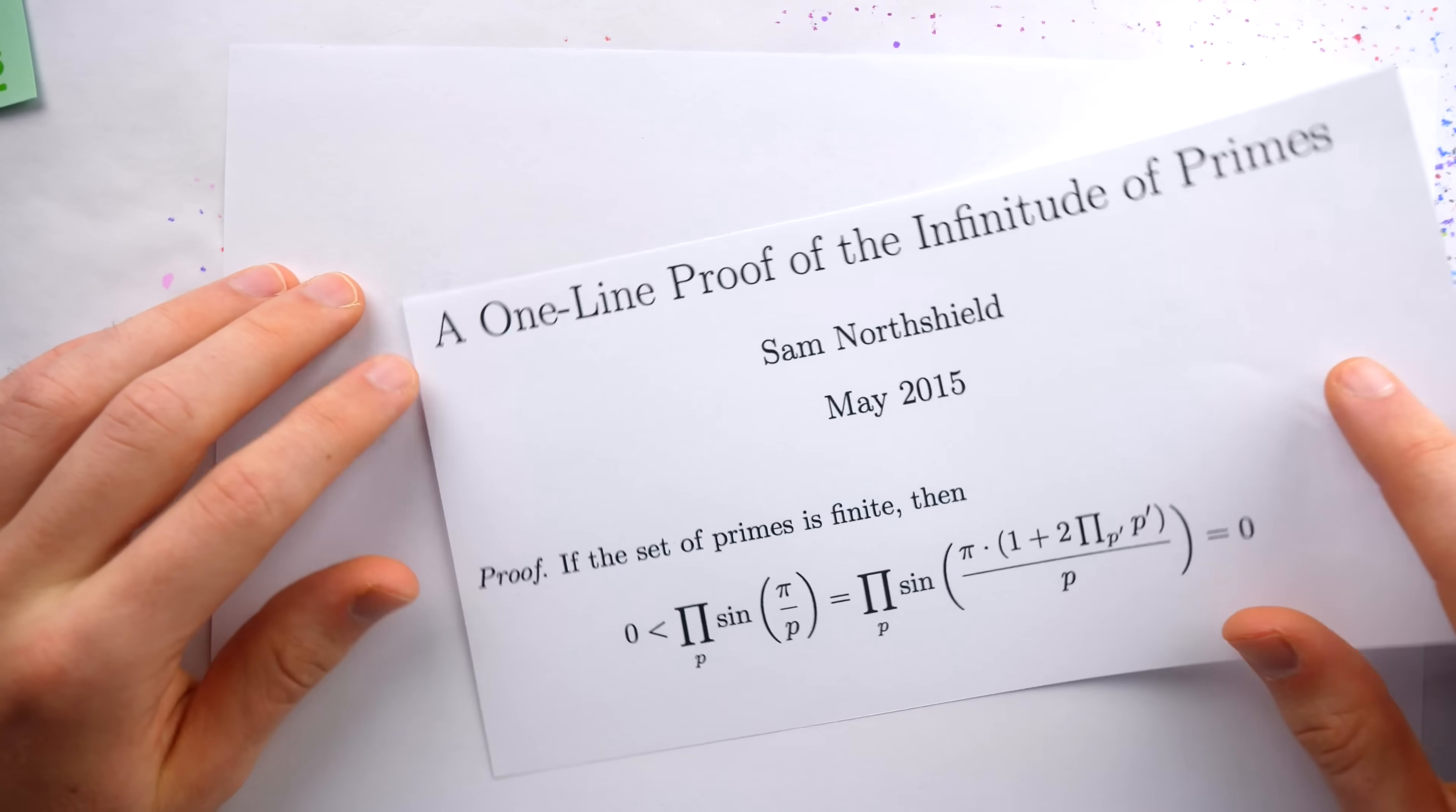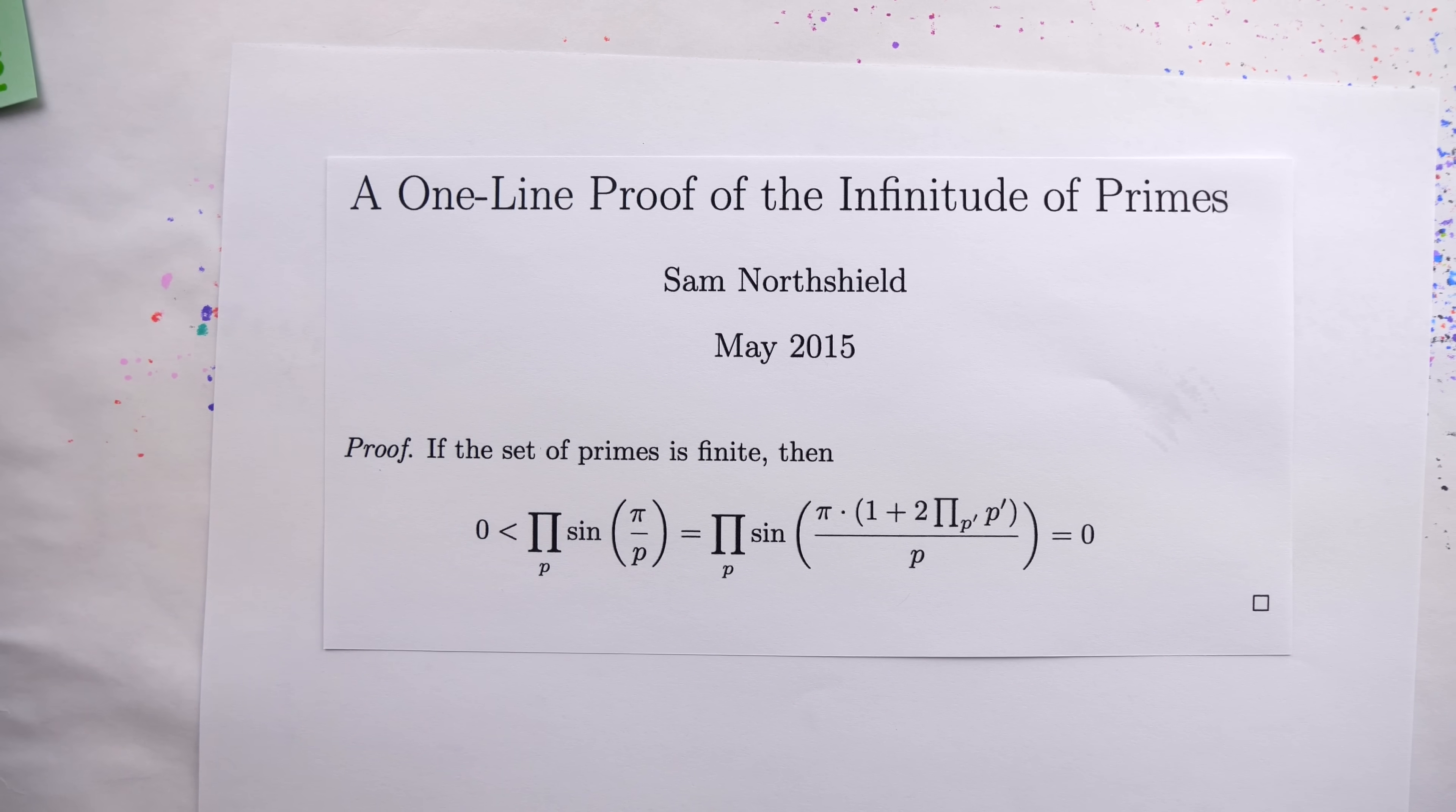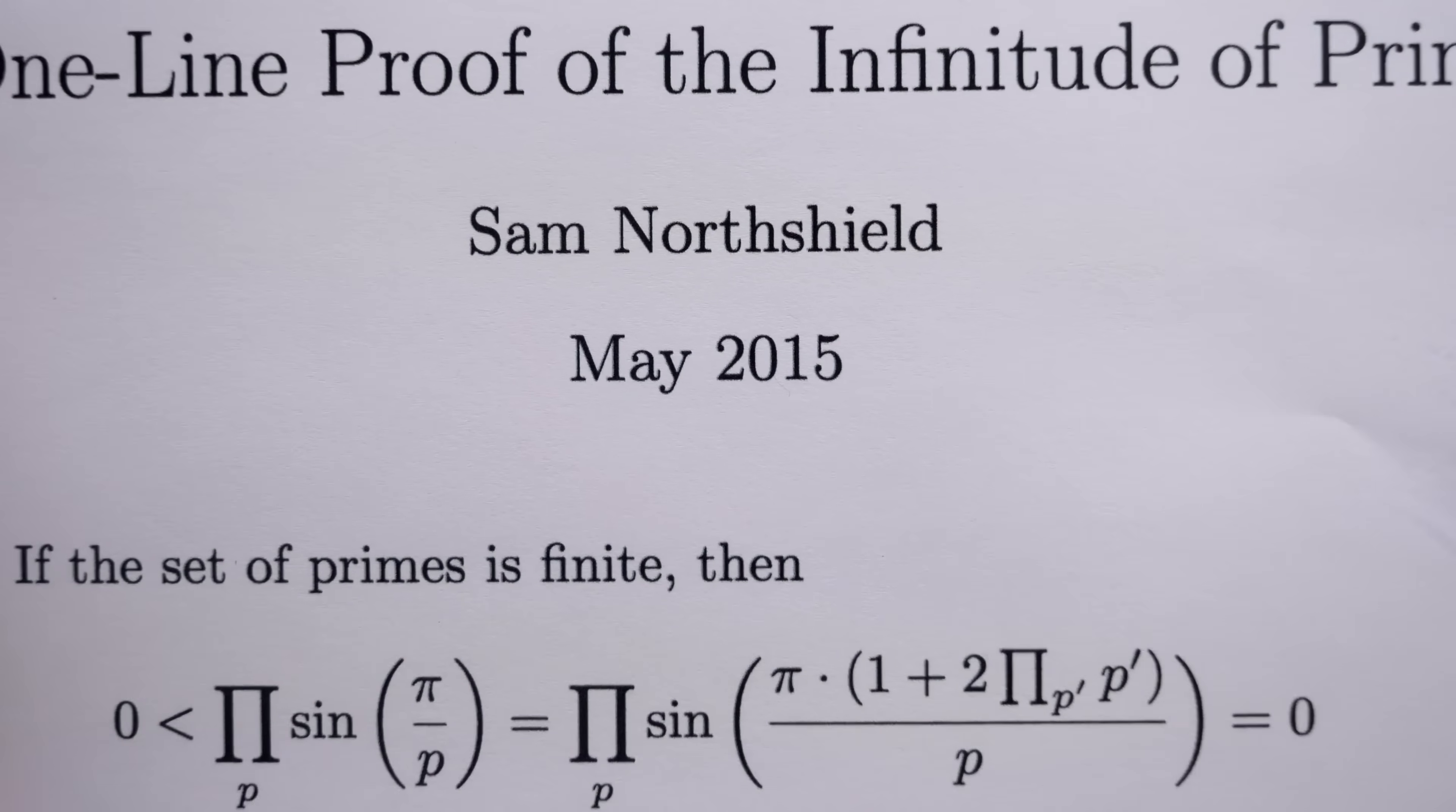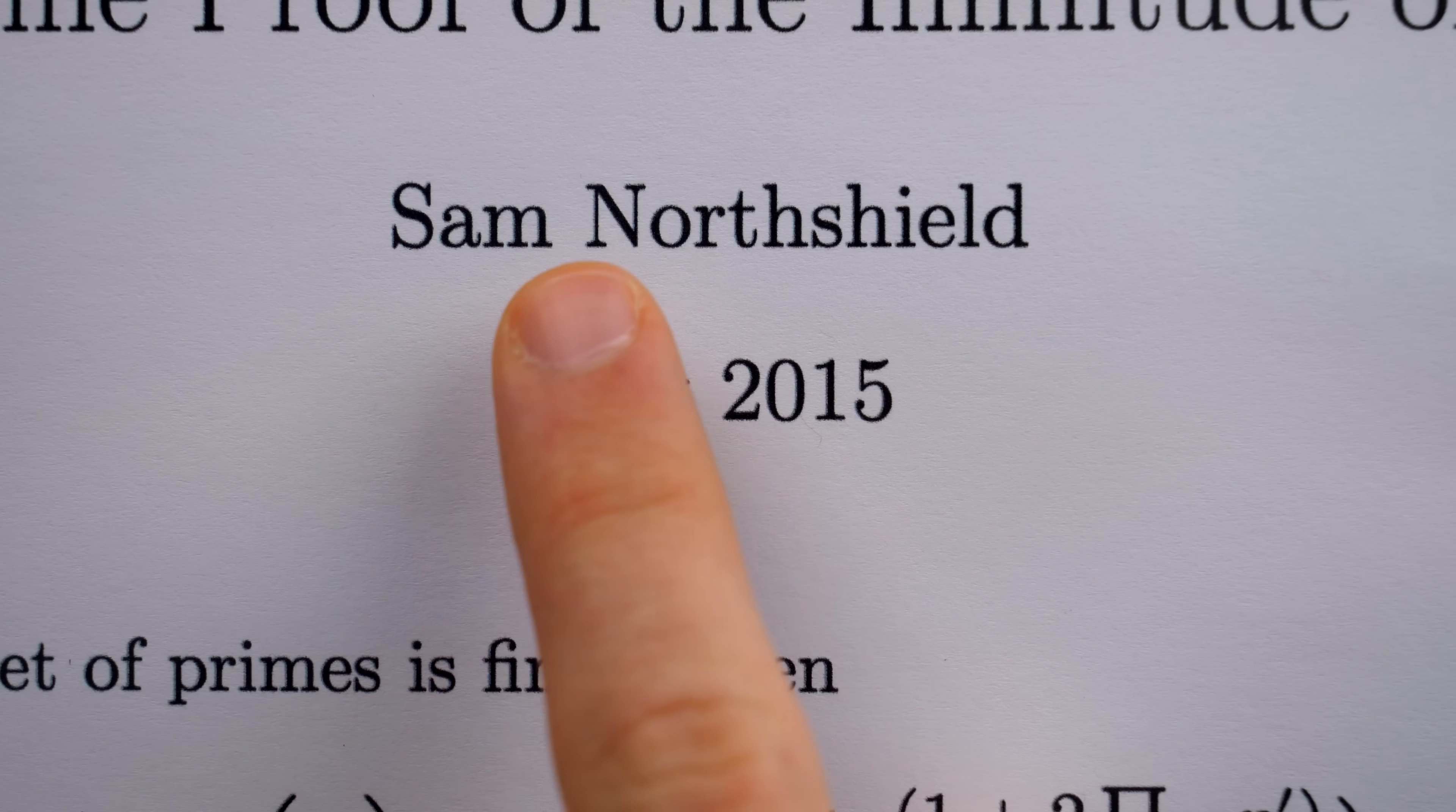Like many famous results, the infinitude of the primes has been proven time and again. But the one-line proof we're looking at today was dropped in May 2015 by Sam Northshield.